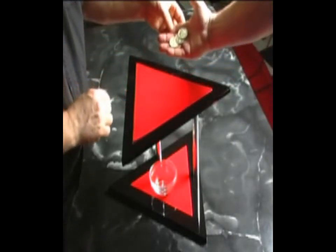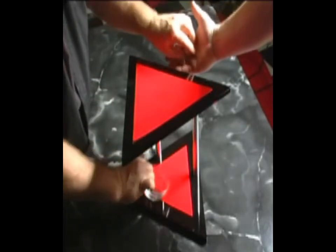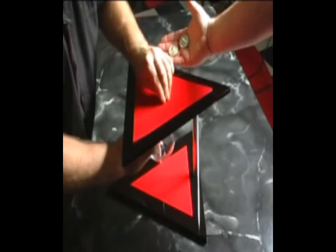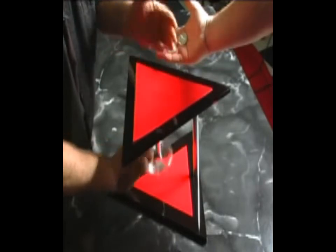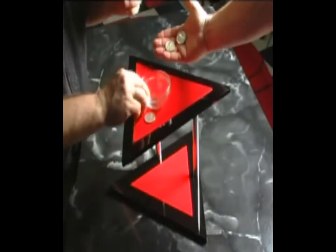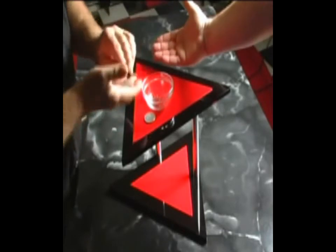If you just freeze for a moment, I'm going to take the first coin and cause it to pass right through the center of Dean's Triangle. That's the first. Now if you'll help me...